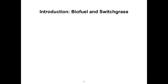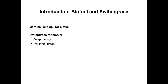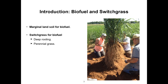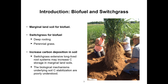So the question is, what can we do with these marginal land soils? In recent years it was proposed to grow biofuel crops there, so that growing biofuel won't be at the expense of growing food. One candidate for a biofuel crop is switchgrass, a deep-rooting perennial grass.